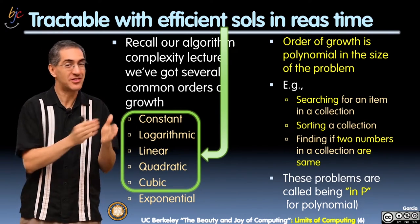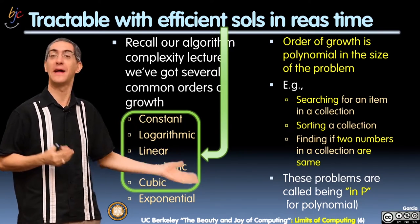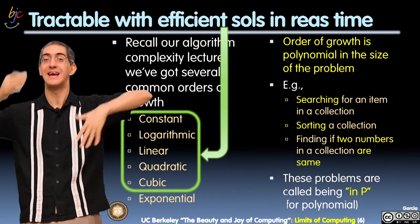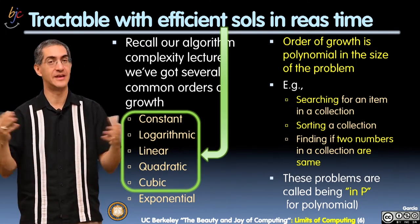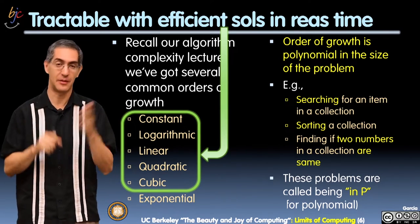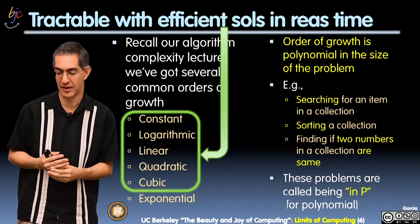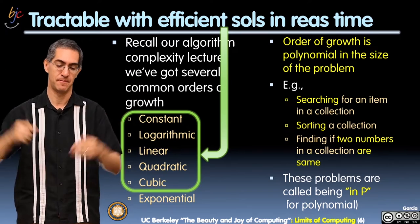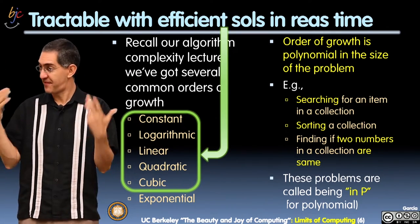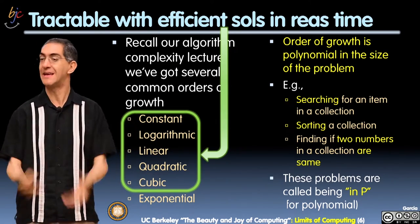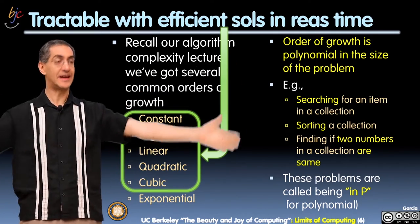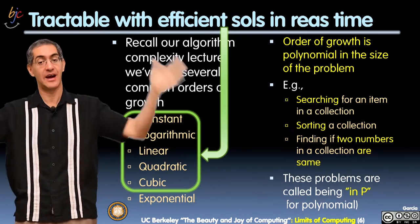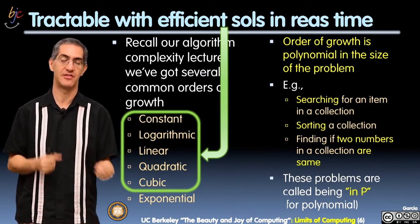Searching for an item in a collection — searching is linear, so that's part of our family. Sorting a collection — we typically say that's on the order of quadratic. You try to compare everybody versus everybody, which is like a grid of things, so we call that part of the quadratic family. Finding if any two numbers in a collection are the same — the shared birthday problem — that's also quadratic. These are called being in P: the family of algorithms solvable with a polynomial solution are in the set P, meaning tractable with efficient solutions in reasonable time.